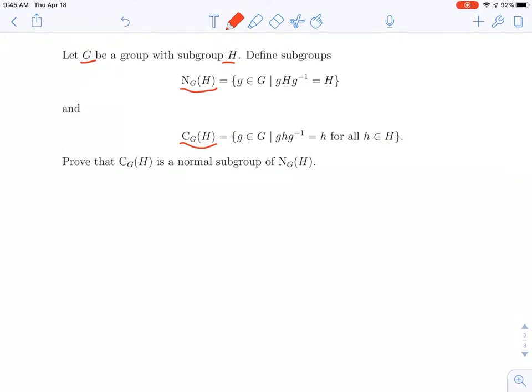Things in the normalizer are group elements which satisfy a condition. Namely, when you conjugate H by that group element, you get back H. And the centralizer, well, it's a lot like the normalizer, only it's when you conjugate the elements of H, you get back the same element of H.